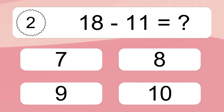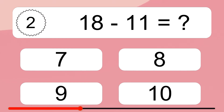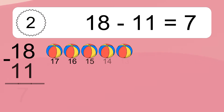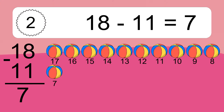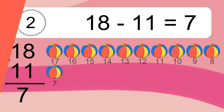18 minus 11 equals what? 18 minus 11 equals 7. Let's count it: 17, 16, 15, 14, 13, 12, 11, 10, 9, 8, 7.